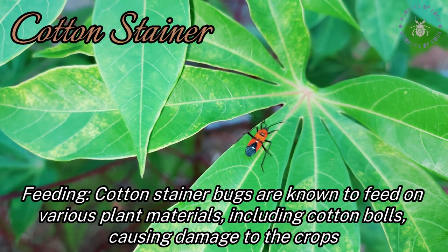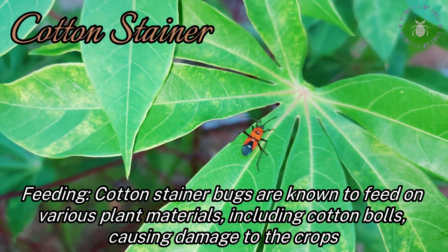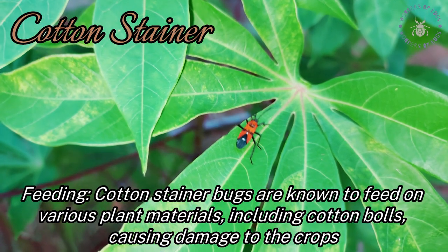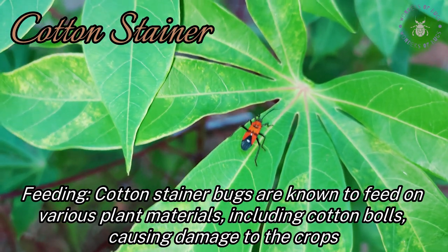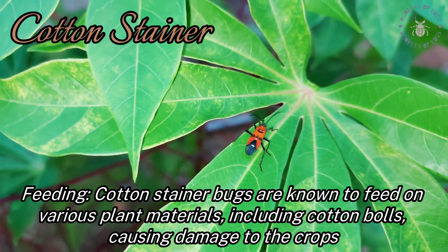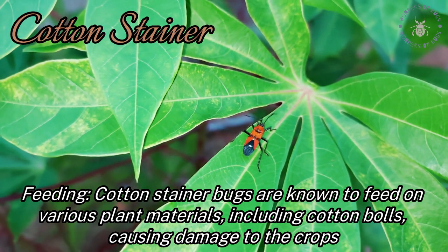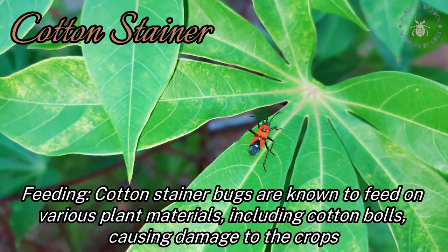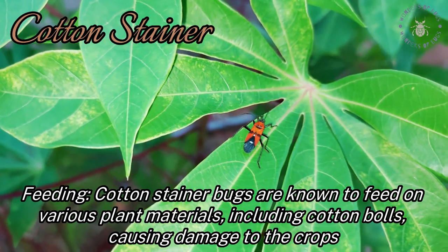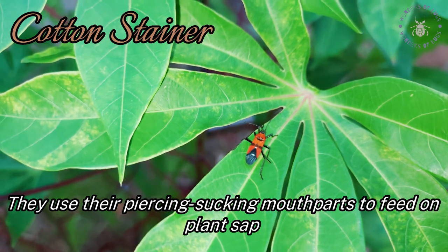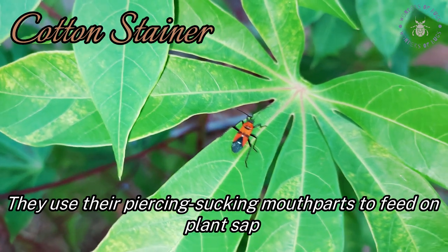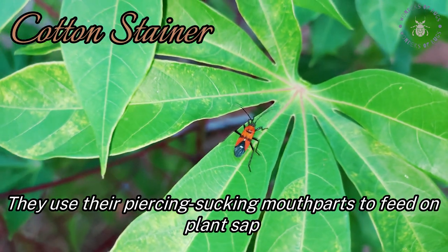Cotton stainer bugs are known to feed on various plant materials, including cotton bolls, causing damage to the crops. They use their piercing, sucking mouthparts to feed on plant sap.